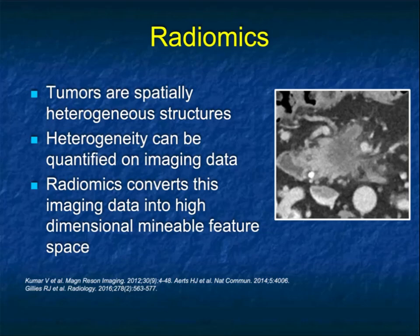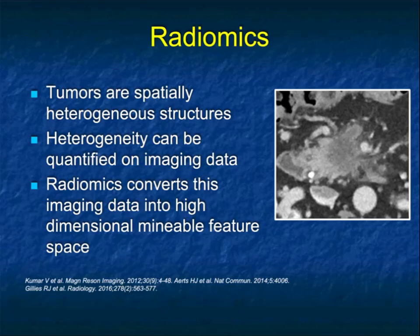When you think about tumors, they're heterogeneous structures. Heterogeneity can be quantified on imaging data, and radiomics can convert this data into a highly dimensional, mineable feature space. It also means you have a spectrum of a disease process. What looks necrotic or heterogeneous is dependent on your protocol — sometimes non-contrast can be good, sometimes arterial, sometimes venous, and perhaps all three can be valuable. How you weigh them matters, and things look different depending on whether you give contrast, the timing of contrast delivery, and the rate of injection.